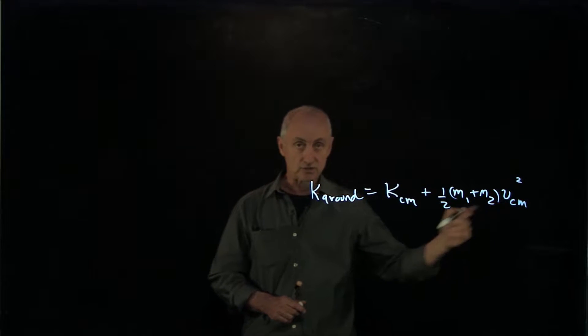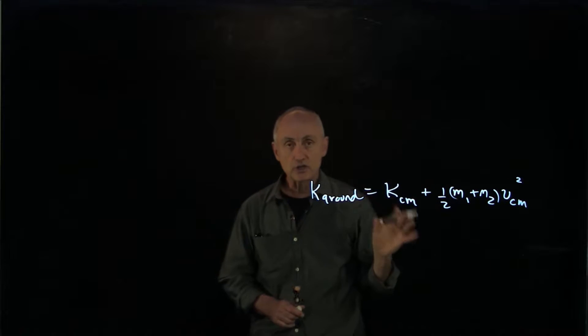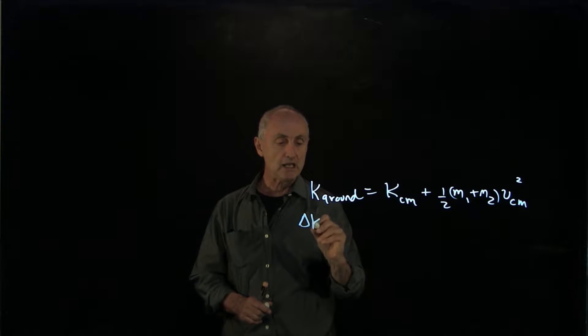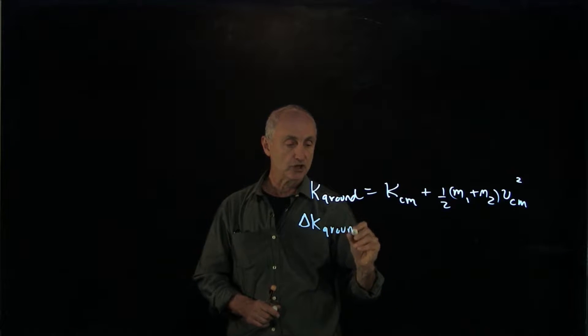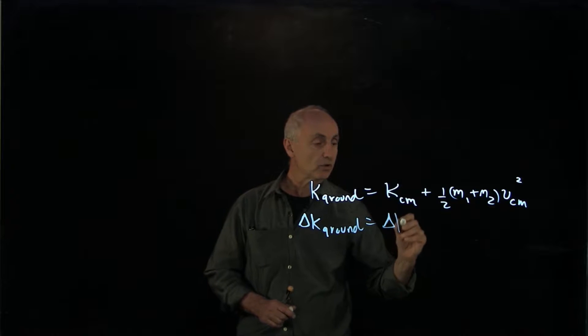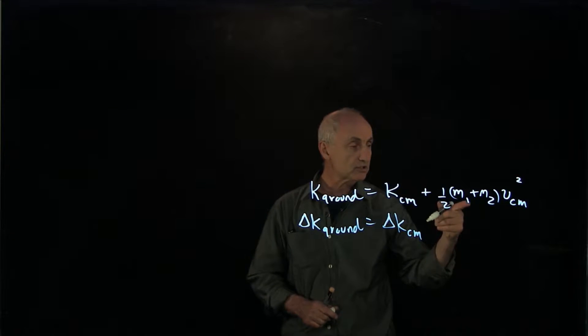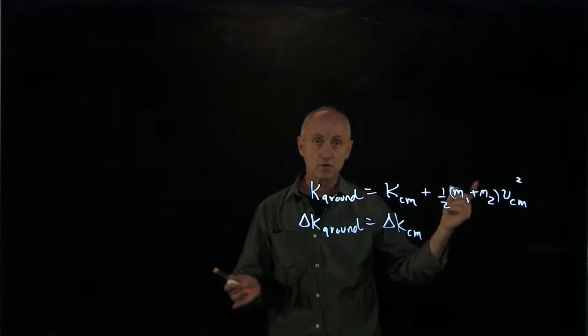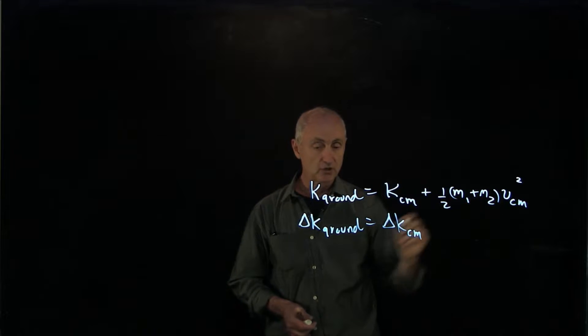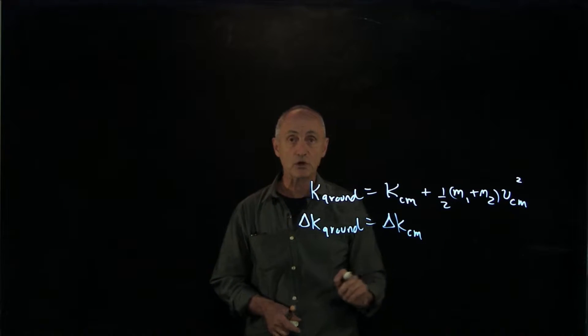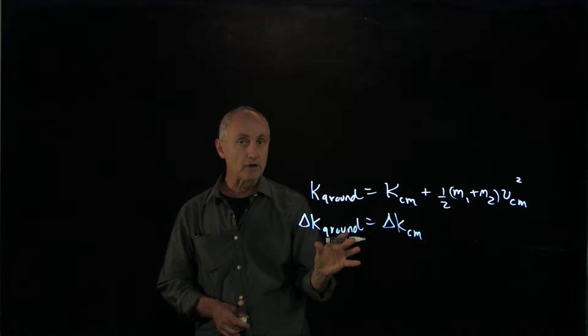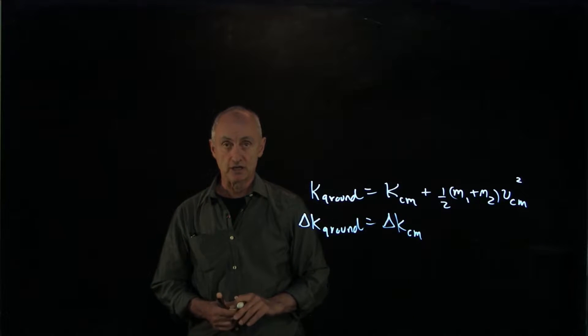This is a constant, whether you're in the initial or final picture. So if we look at the change in kinetic energy in the ground frame, that's equal to the change in kinetic energy in the center of mass frame. This term is constant, so there's no change in that term. We have a crucial result that the change in kinetic energy in the ground frame is equal to the change in kinetic energy in the center of mass frame.